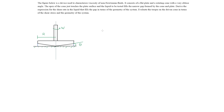In this problem, we're going to be looking at a device that measures viscosity in terms of a plate rotating with some given RPM. The problem statement says the figure below is a device used to characterize viscosity of non-Newtonian fluids. It consists of a flat plate and a rotating cone with a very obtuse angle. The apex of the cone just touches the plate surface, and the liquid to be tested fills the narrow gap formed by the cone and the plate.